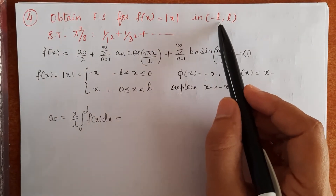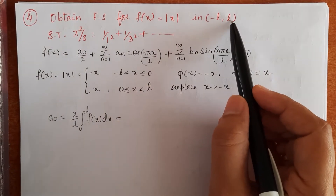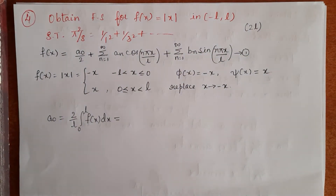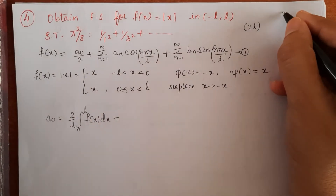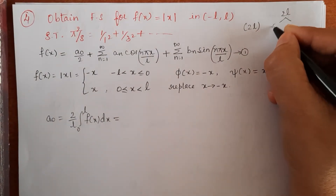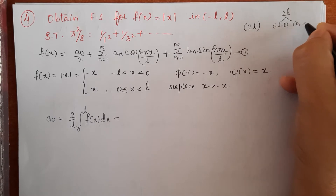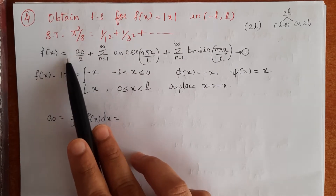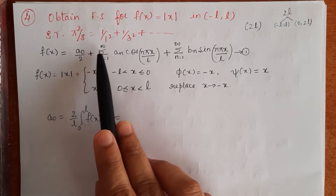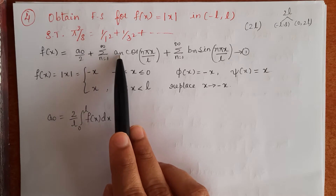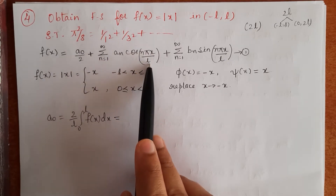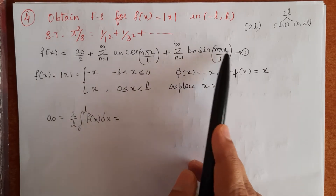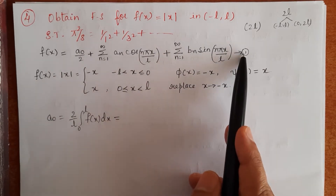Observe the given interval. The interval is between minus l to l. So we should use the Fourier series expansion of the arbitrary period 2l, because the arbitrary period 2l is split into minus l to l and 0 to 2l. So I am using the corresponding Fourier series expansion: f(x) equals a₀ by 2 plus summation n=1 to infinity aₙ cos(nπx/l) plus summation n=1 to infinity bₙ sin(nπx/l). Call it equation number 1.